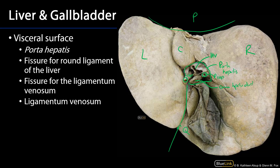In the same sort of continuity of plane, insinuating between the left lobe and the caudate lobe, is the fissure for the ligamentum venosum. That ligamentum venosum is the remnant of the ductus venosus, which is a shunt from the umbilical vein up to the inferior vena cava within the fetus — delivering oxygen-rich blood bypassing liver circulation directly to the inferior vena cava and up to the heart of the fetus. We can see a little bit of it there; I'd recommend reflecting the caudate lobe from the left lobe to see the ligamentum venosum within that fissure.